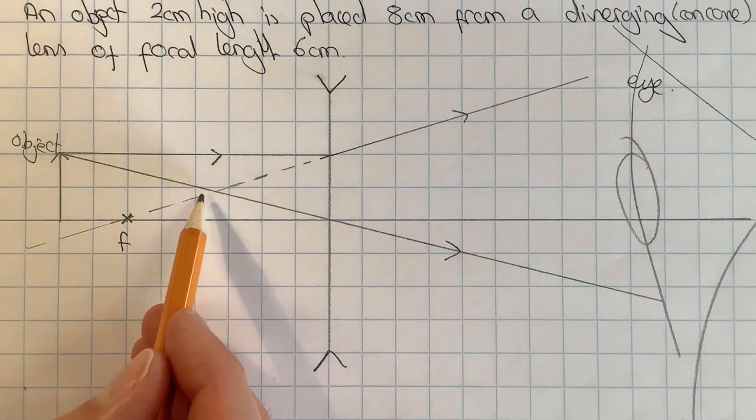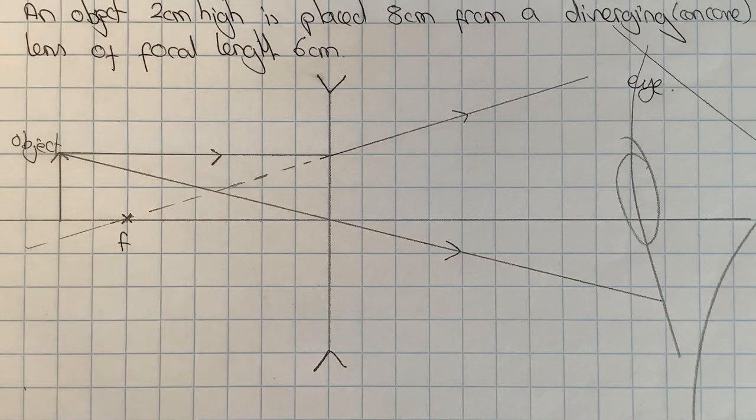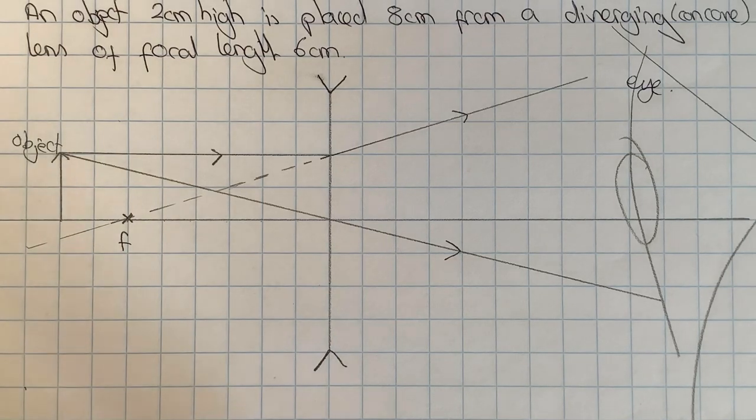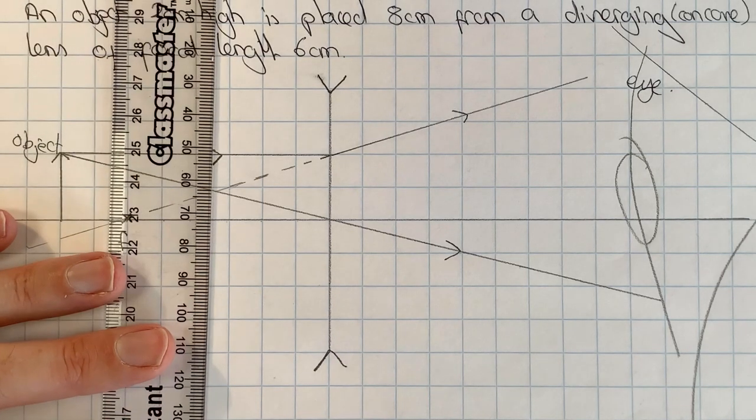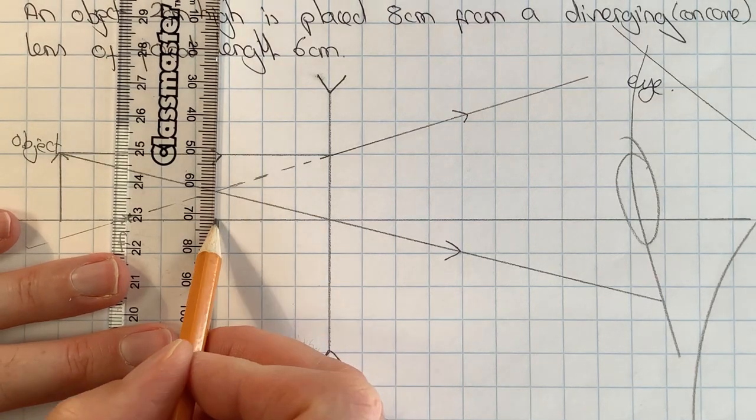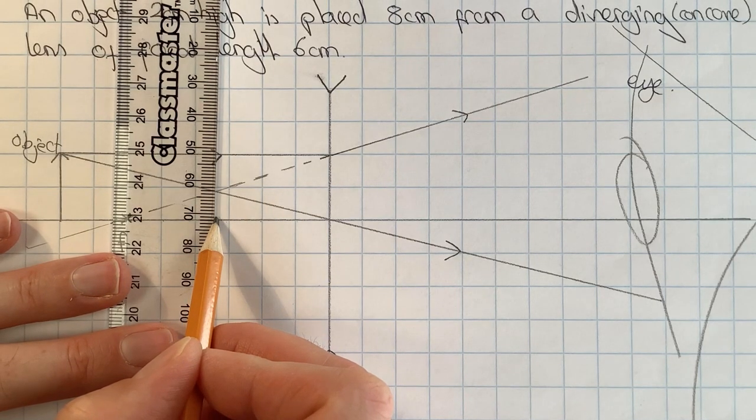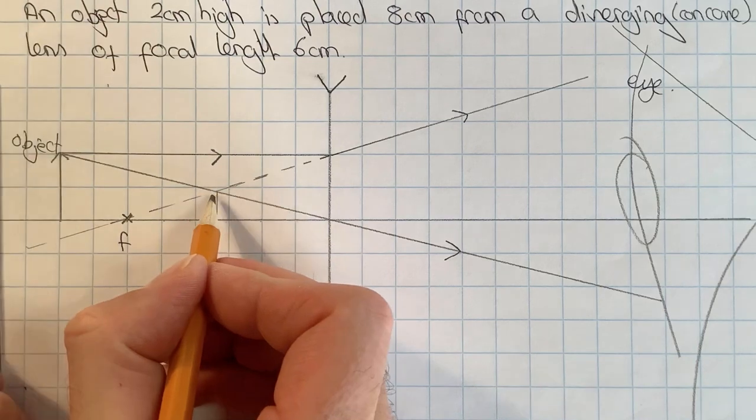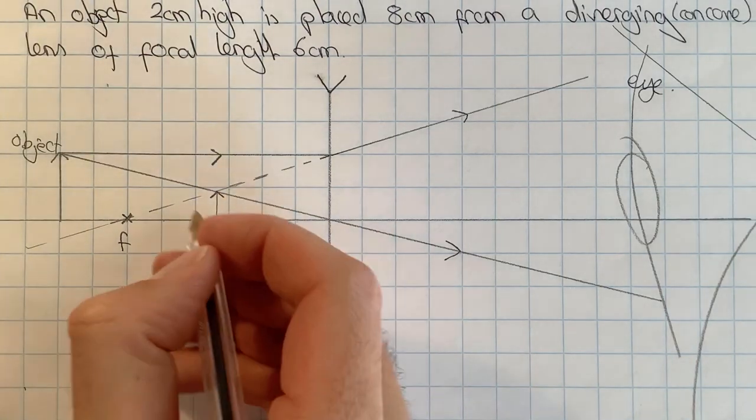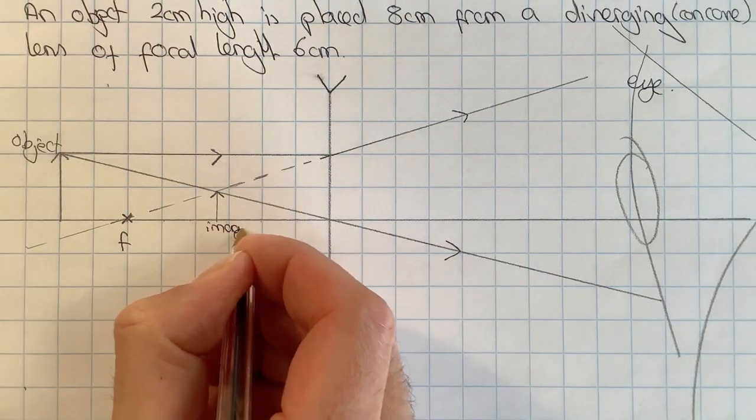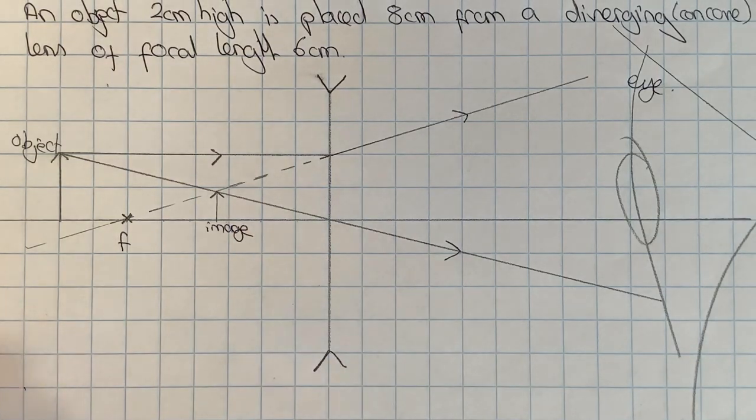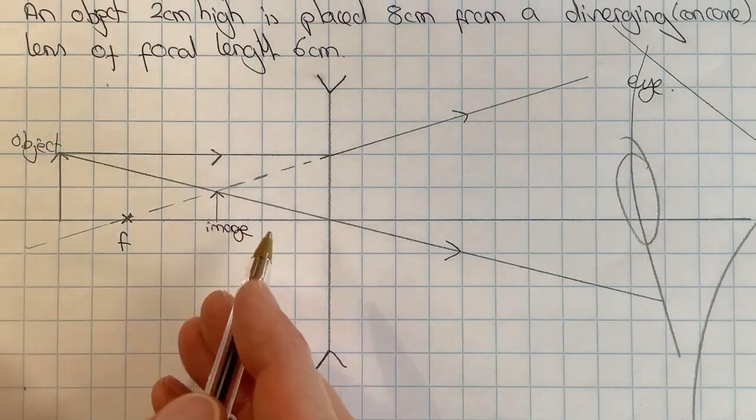Where these rays intersect here is where the image will be formed. Like before I'm going to draw a line vertically from the principal axis up to where those rays cross and I can label that as my image.